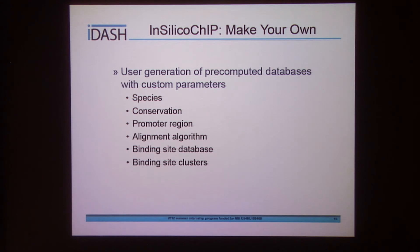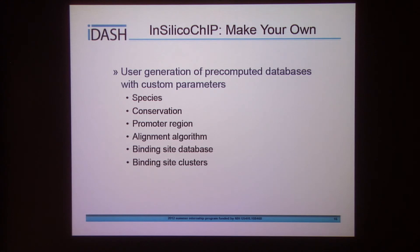The long-term application of this is in-silico CHIP, which will allow users to generate their own pre-computed databases for performing these experiments with custom parameters — maybe your own species, your own set of species, different measures of conservation, different places for promoters, a different alignment algorithm, a different binding site database, or looking only at clusters of transcription factors that cluster together.